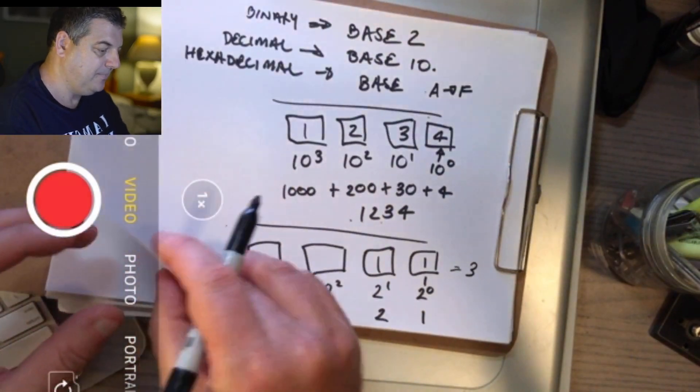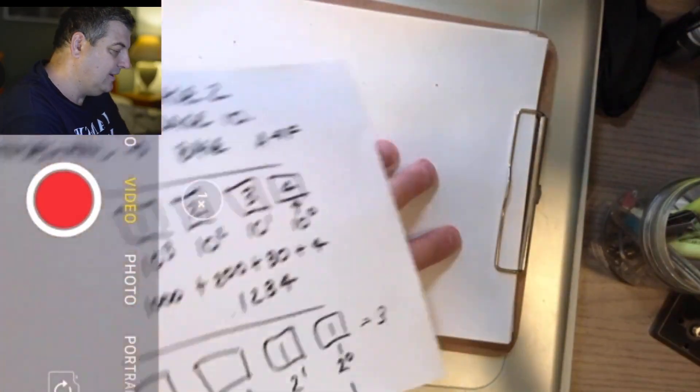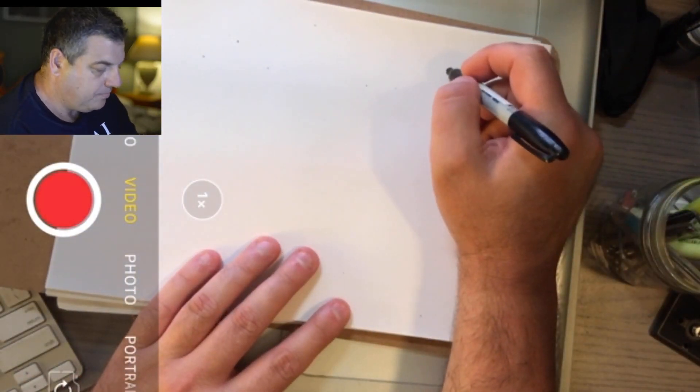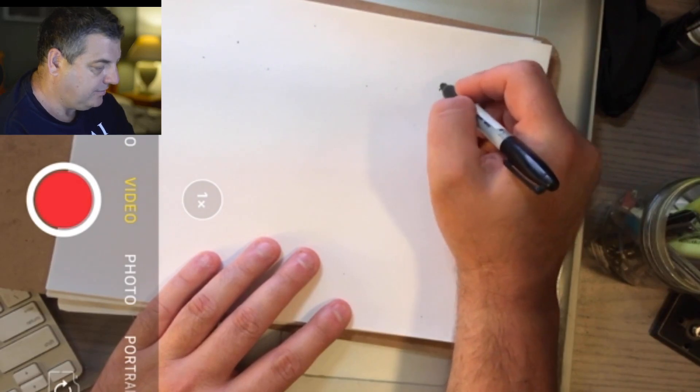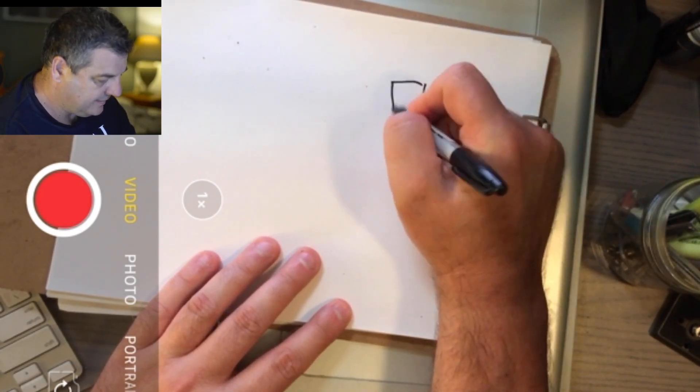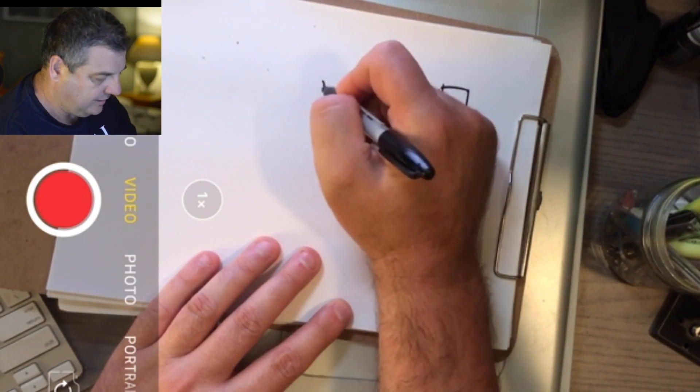So let's get another sheet of paper and we'll keep working on this. It's really that simple. Let's draw it and it can work backwards as well, so if you want to convert a big number to binary, let's do some more boxes here.